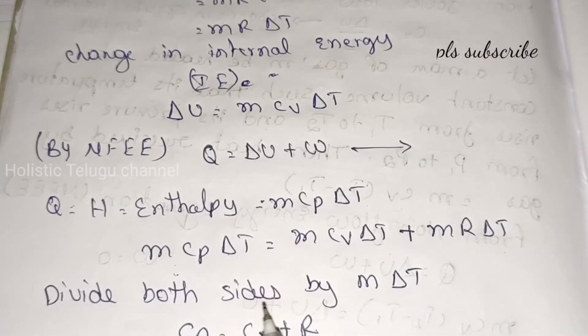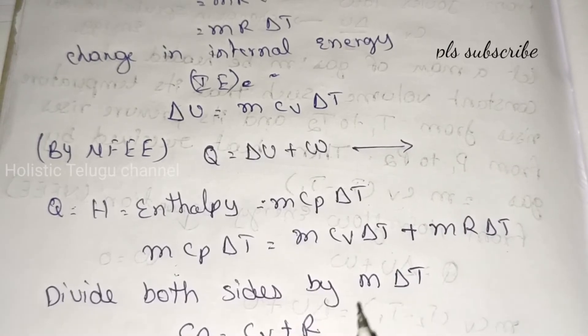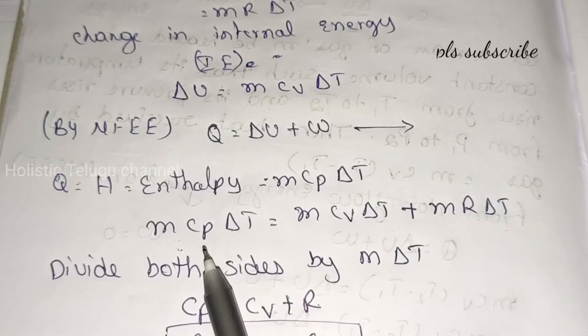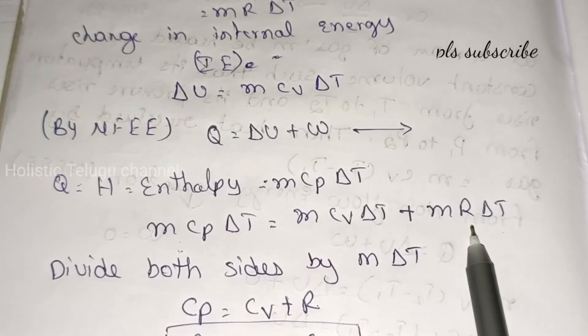Dividing both sides by m delta T, m delta T cancels out from each term. We get Cp equal to Cv plus R.